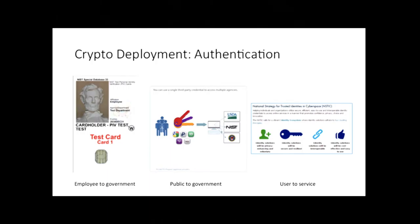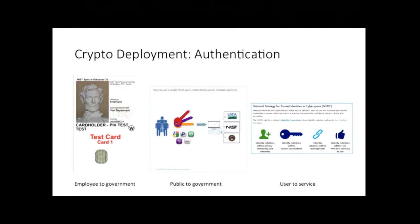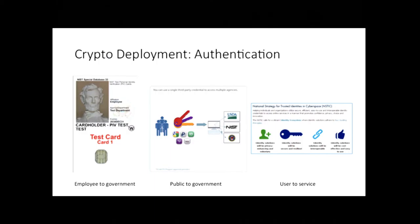For the U.S. government, there are three scenarios to consider. The first is an employee or contractor who needs to authenticate themselves to a government service. For this, we have a system based on NIST standards where people get an employee ID card called a PIV card — personal identity verification. The Department of Defense calls it a CAC, Common Access Credential. It's a smart card you use to authenticate in various ways.